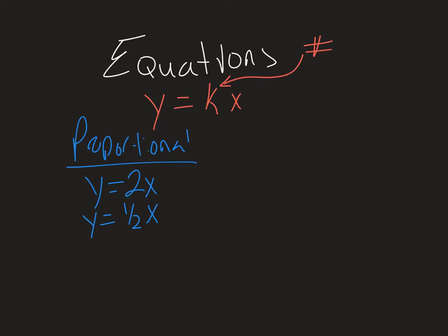It could be a decimal. I could also have something like 1.6 times x. And this number here is called the constant of proportionality. It's a big name for just a number. It's whatever this k is, whatever number is multiplied times the x to make y.